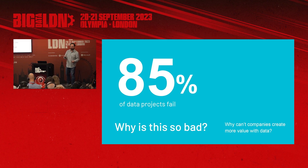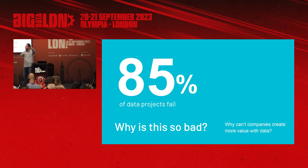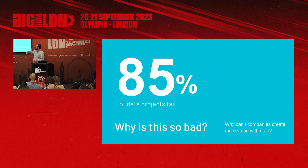Do you think so? No. These aren't the reasons people fail. This can be a portion of it. I would say these are problems that come out of the problems we're going to talk about. These are people problems — your people chose the wrong thing. But there is a problem that comes before that.